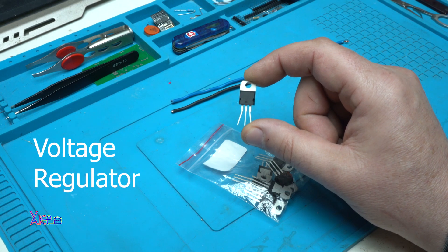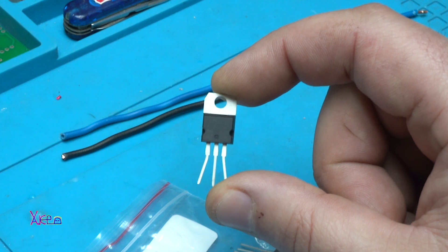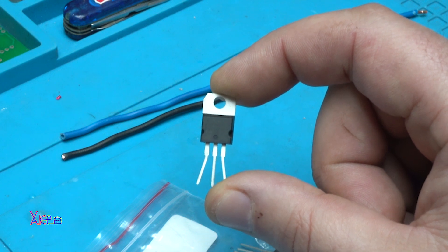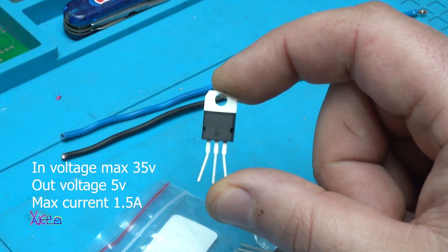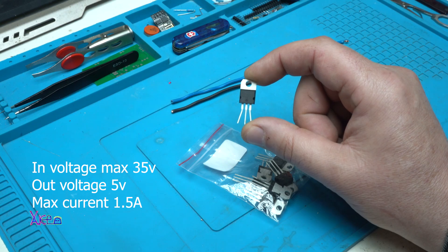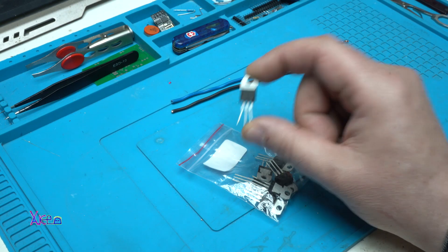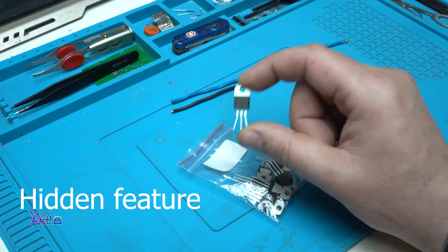The LM7805 is a voltage regulator with a maximum input voltage of 35 volts and the output voltage will be 5 volts all the time. But this voltage regulator has a hidden feature.